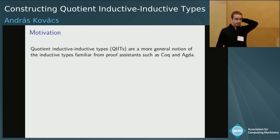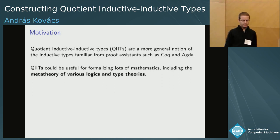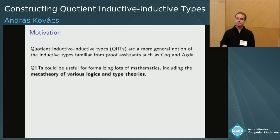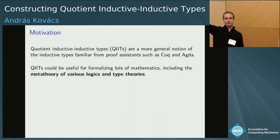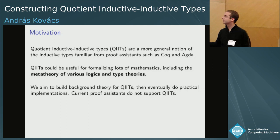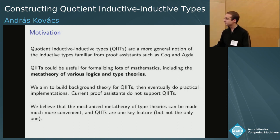Quotient-inductive-inductive types are a more general notion of the inductive types familiar from proof assistants such as Coq and Agda. The motivation is that QIITs could be useful for formalizing lots of mathematics, including the metatheory of various logics and type theories, and it really starts to shine when we get to dependent type theories. So this could be a tool for formalizing dependent type theory. QIITs are one key feature, but not the only feature — there are a lot of more technical challenges.